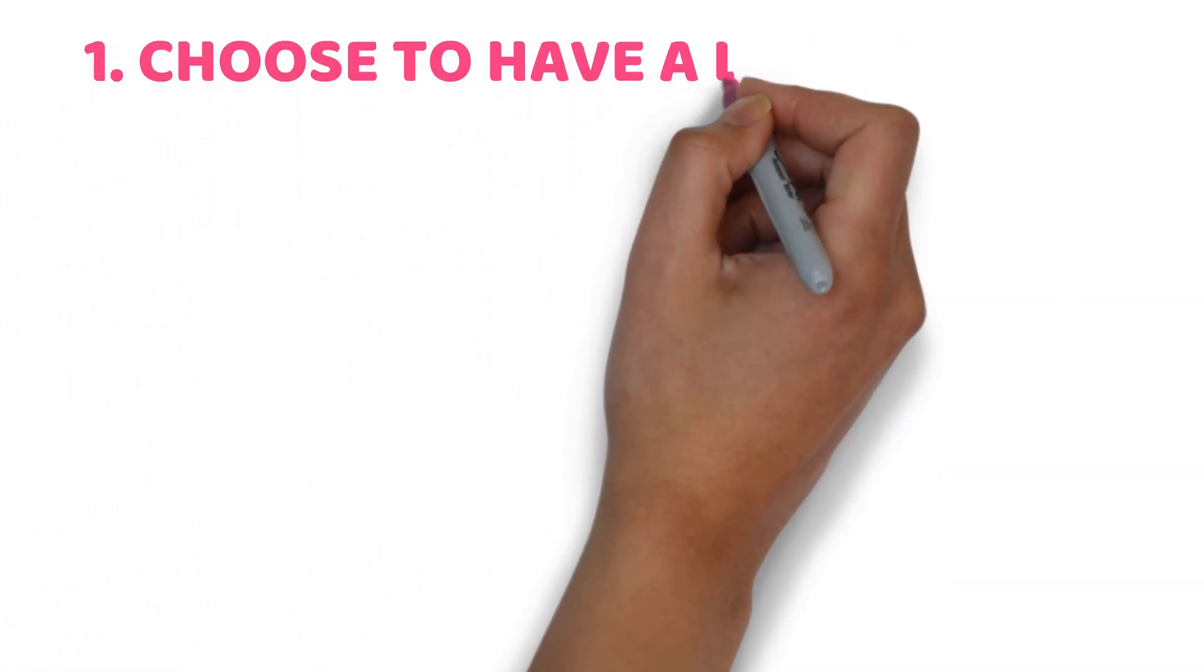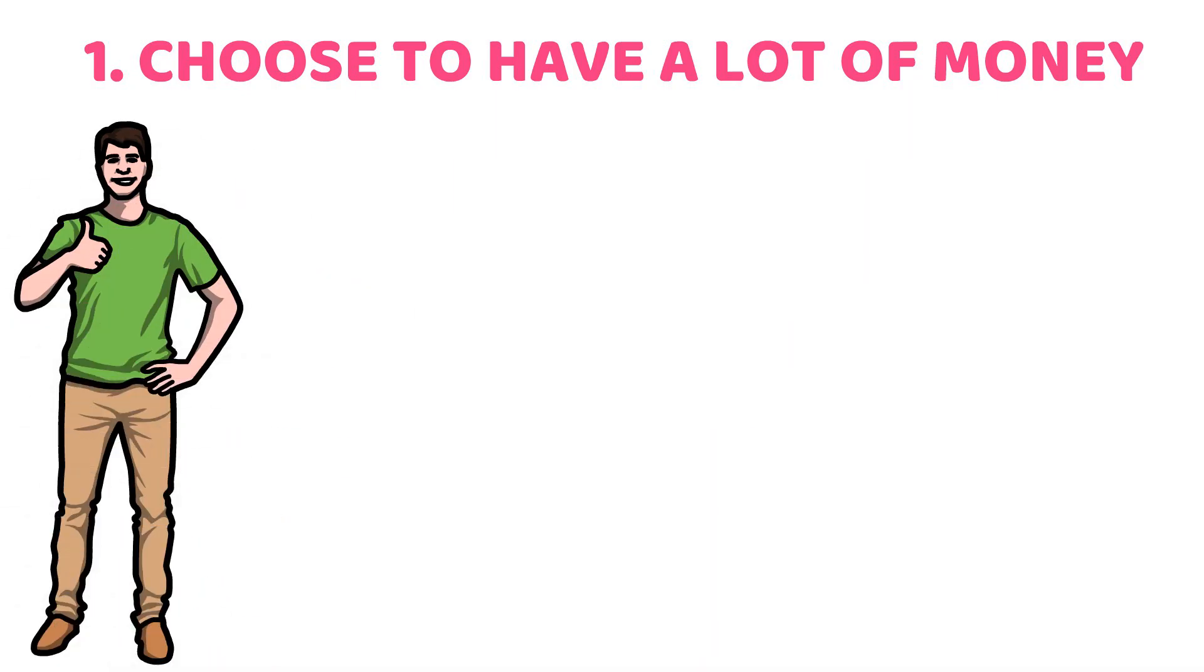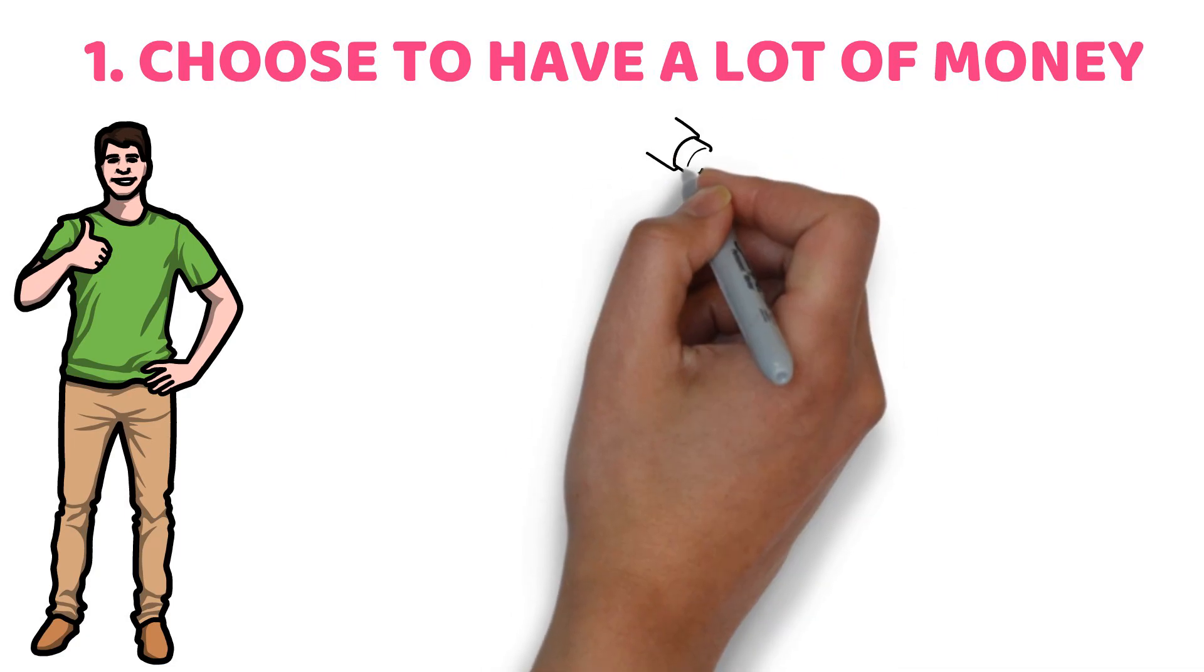Step 1: Choose to have a lot of money. It doesn't seem easy, but it really is. If someone doesn't think they can become rich, they probably won't.